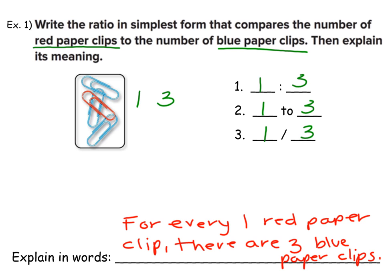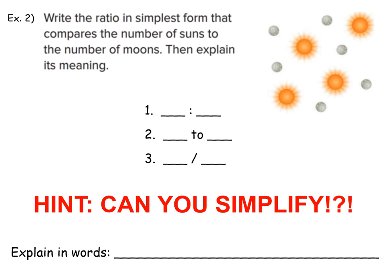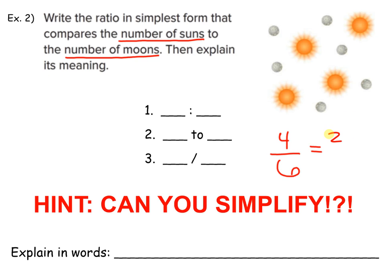Let's try another example. Here we're moving away from paperclips. Write the ratio in the simplest form that compares the number of suns to the number of moons, and then explain its meaning. Let's count the suns first: one, two, three, and four. How many moons? One, two, three, four, five, six. So if this was a fraction, you'd have four over six. How would you simplify that? You would simplify it as two over three. That's how you need to write your ratio: two colon three, two to three, or two slash three.